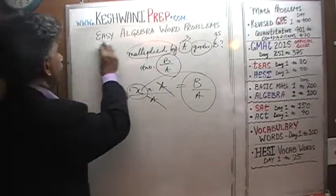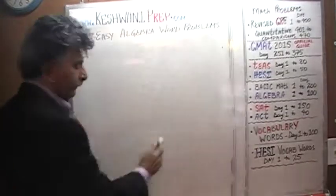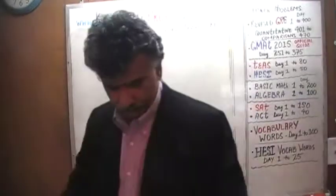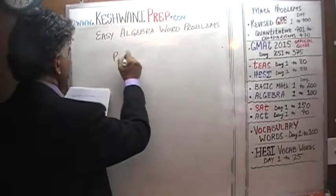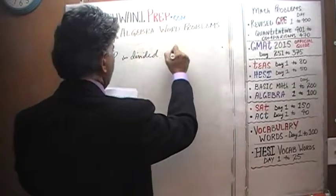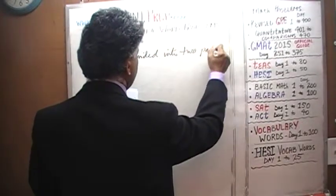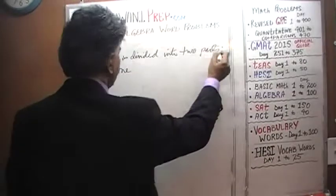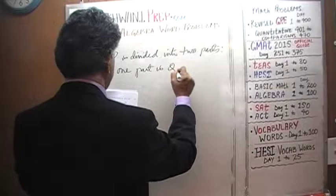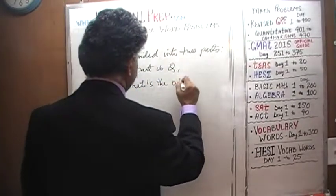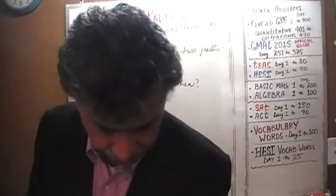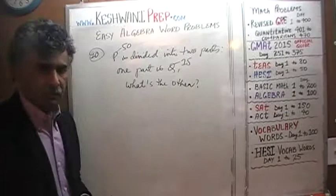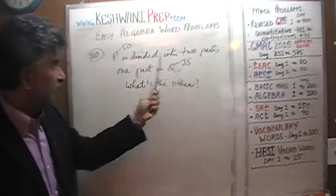Let's do the next one, number 10. P is divided into two parts. One part, we are told, is Q. What's the other? Again, let's convert this into an arithmetic problem by plugging in numbers. If we were told 50 is divided into two parts, and one part is 15, well, if one part is 15 the other part must be 35, because 15 plus 35 gives us 50.